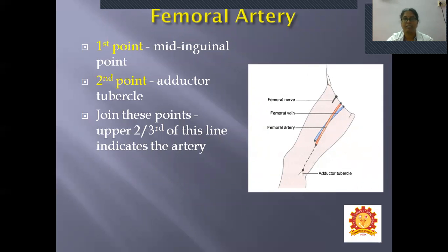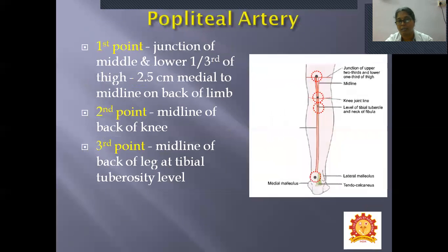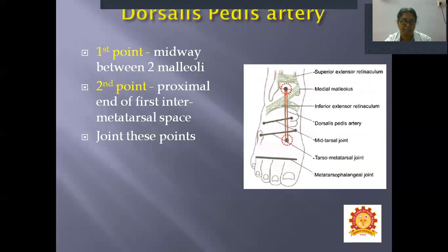Surface marking of vessels and nerves. Femoral artery: first point at the mid-inguinal point, second point at the adductor tubercle — join these two points for the approximate location of the femoral artery. The femoral artery continues as the popliteal artery: first point at the junction of upper two-thirds and lower one-third of the thigh, second point at the midline of the back of the knee, third point at the midline of the back of the leg at tibial tuberosity level. For the dorsalis pedis artery: first point midway between the two malleoli, second point at the proximal end of the first inter-metatarsal space.